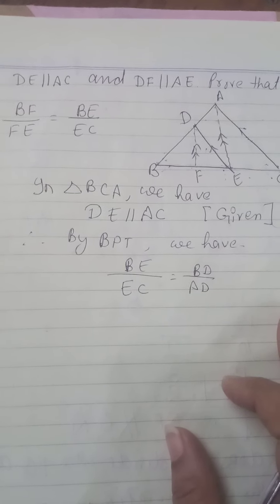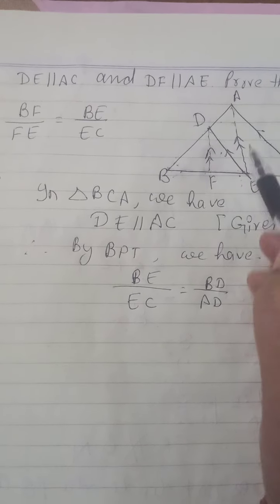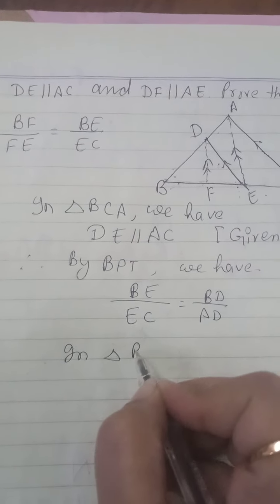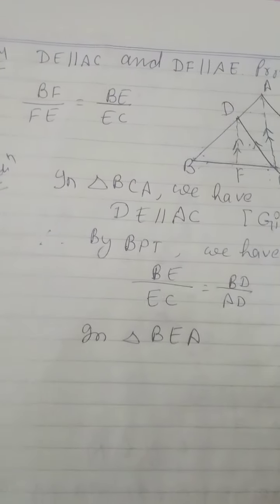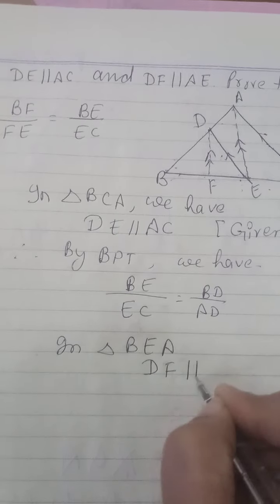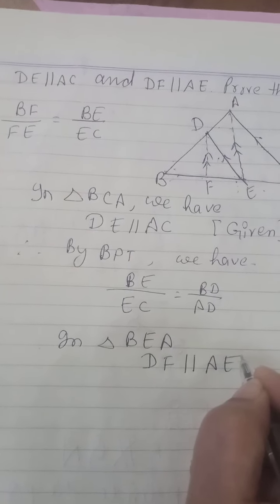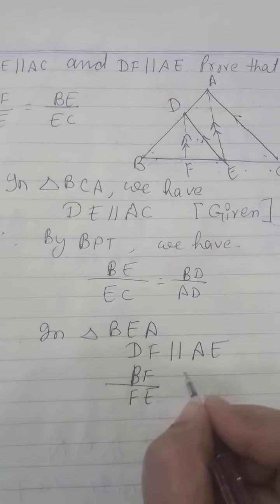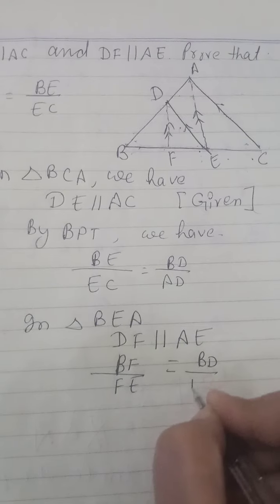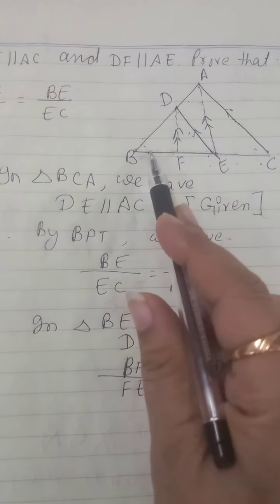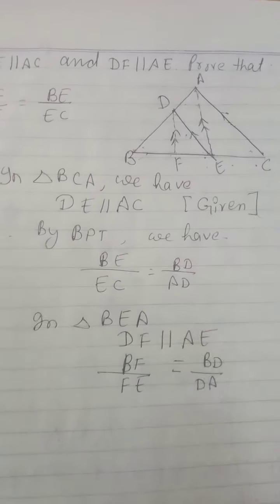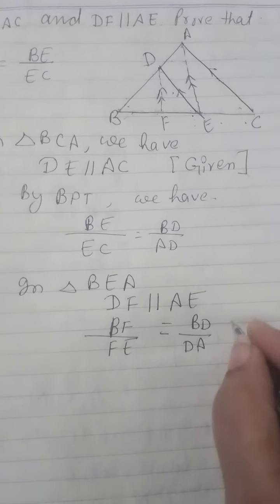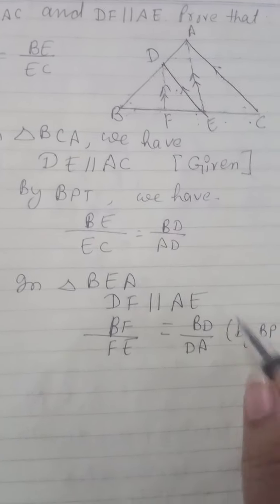For the solution, we first take triangle BCA. In triangle BCA, DE is parallel to AC — this is given. Therefore by BPT, BE upon EC is equal to BD upon AD.